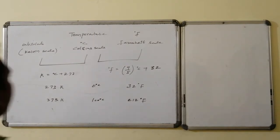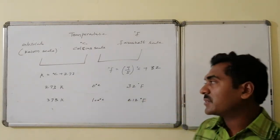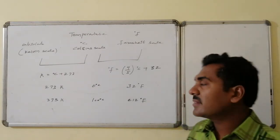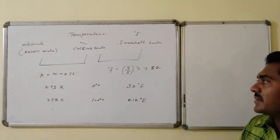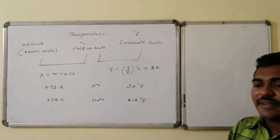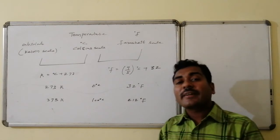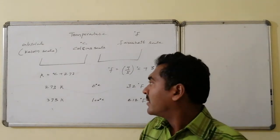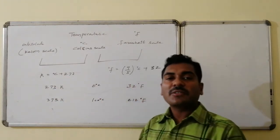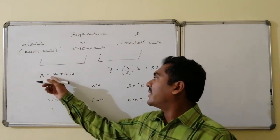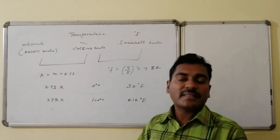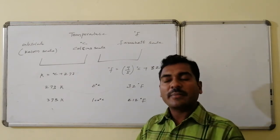Temperature is measured in three ways: one is the absolute scale, also known as the Kelvin scale; second is degree centigrade, known as the Celsius scale; and third is the Fahrenheit scale. The relation between Kelvin and Celsius: K = °C + 273. So 0°C = 273 K, and 100°C = 373 K. The SI unit of temperature is Kelvin.